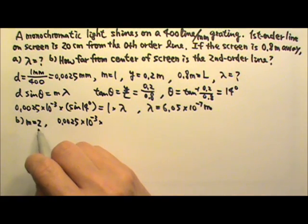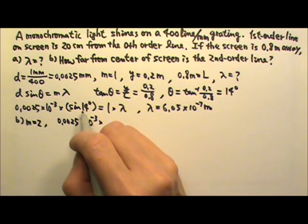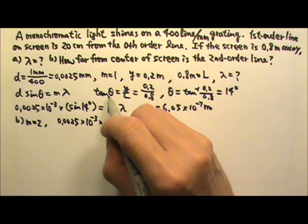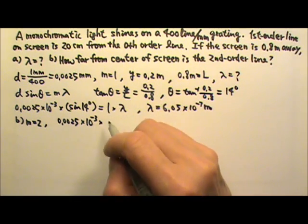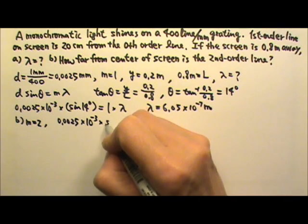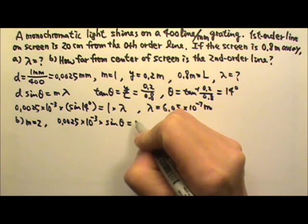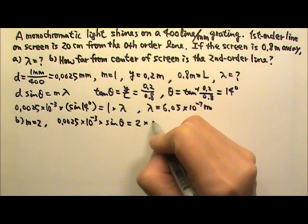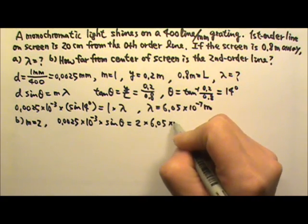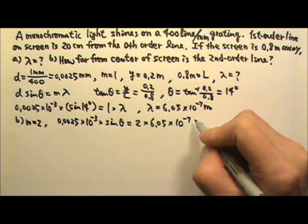Now, because the second order, the angle is going to be even bigger. That means we cannot use sine theta equals to Y over L. So we have to first find the angle and then use tan theta equals to Y over L. So this is times sine theta equals to M times the wavelength 6.05 times 10 to the negative seventh.